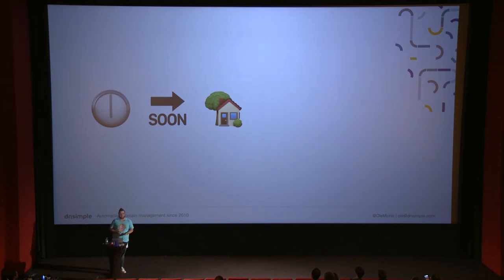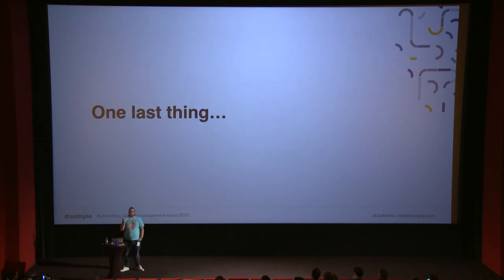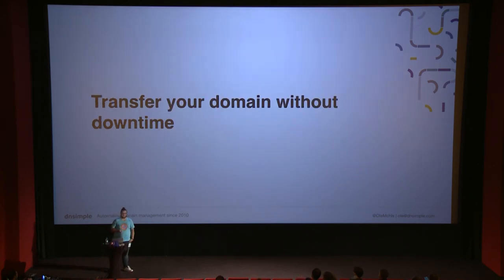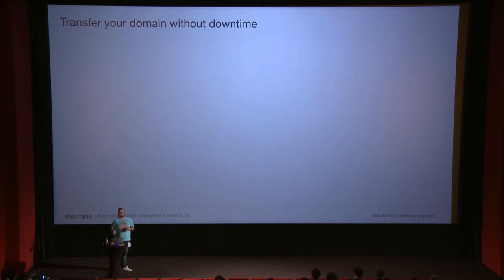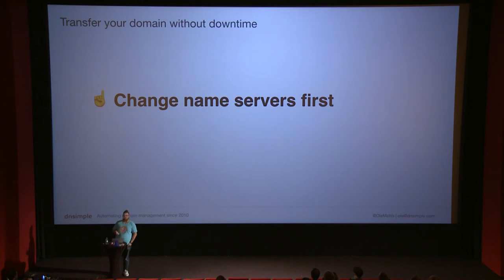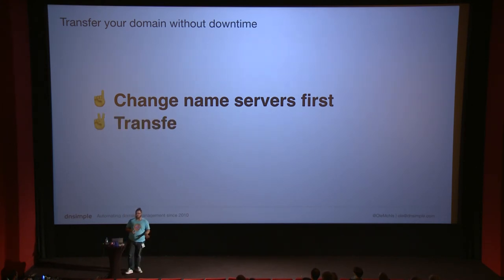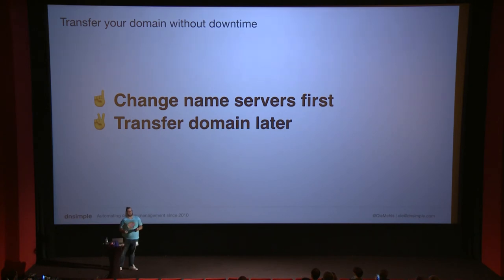It's half past five and you probably want to go home, so we can't finish the full chocolate pizza story. But I promised one last thing in the abstract: how can you transfer your domain without downtime? With all the knowledge you've gained — knowing that the domain name system and DNS are two different things — the answer is: you change your name servers first. Go to your current registrar, set the name servers to your new registrar, wait until everything works, and then start the actual domain transfer. Because transferring a domain takes really long — up to a week — and if your website goes down during migration because registries like to mess up, you won't have to wait seven days.